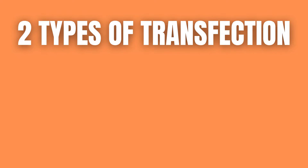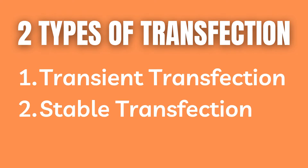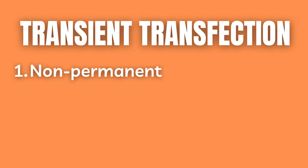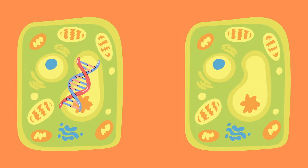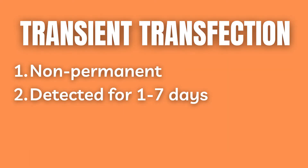There are two main types of transfection: transient transfection and stable transfection. Transient transfection introduces a nucleic acid only for a limited time since it is not integrated into the genome of the cell. Therefore, this genetic material will not be passed on during cell division. In other words, there is no cross-generational inheritance. Depending on what method is utilized, a transgene transfected in a transient manner can usually be detected for one to seven days.